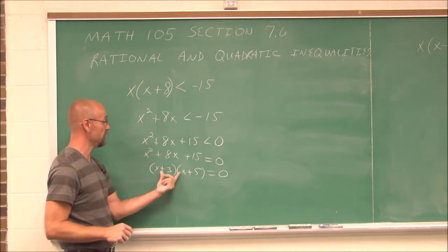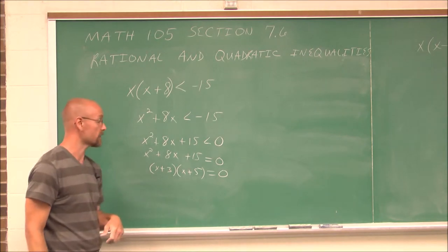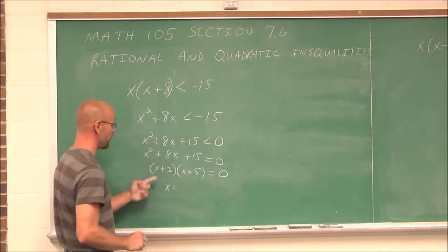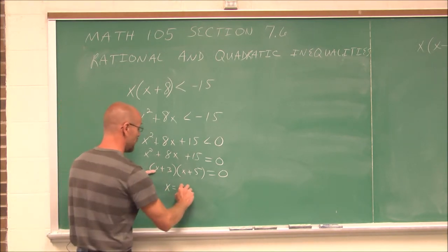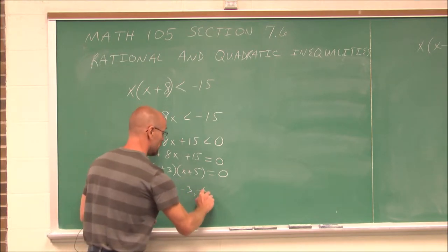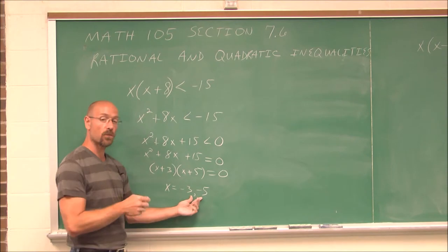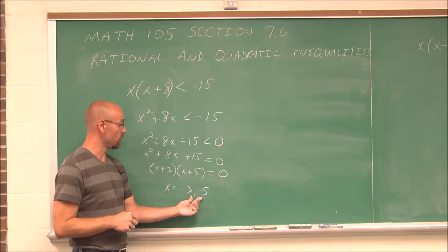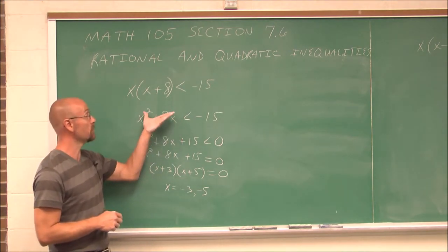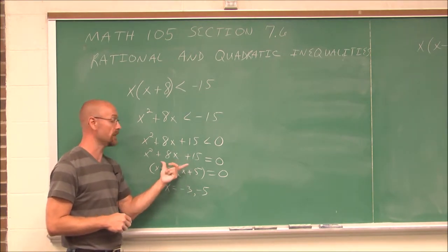3 times 5 is 15, and 3x plus 5x is 8x. So now if we solve it, we find that x would be negative 3 or negative 5. These values are what are called the critical points. They are not solutions to our inequality — they're solutions to the related equation.